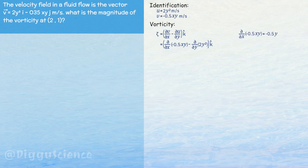The partial derivative of minus 0.5 xy with respect to x is minus 0.5 y. The partial derivative of 2y squared with respect to y is 4y.